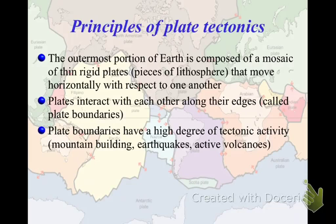Between all of the other things we've learned so far — seafloor spreading, continental drift, the Vines and Matthews — all of those evidences together came up with what's called plate tectonics, which is the current model of how the earth's plates move. The basic idea is that there are rigid plates made out of lithosphere that move along the surface of the earth in pieces, and these plates interact with each other due to activity within the earth's core, giving rise to tectonic activity like earthquakes and volcanoes.